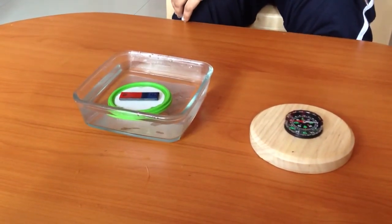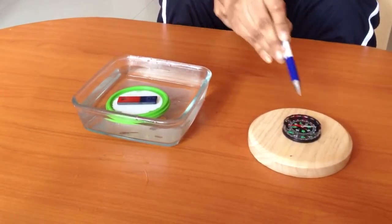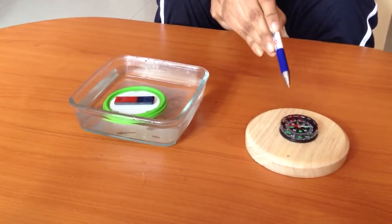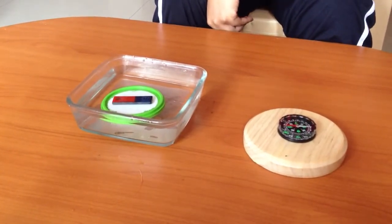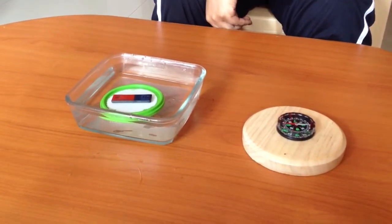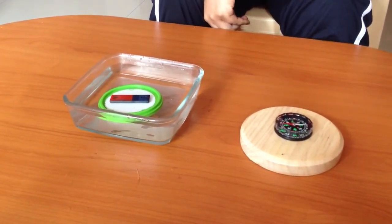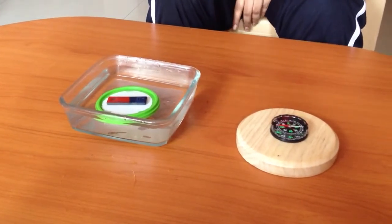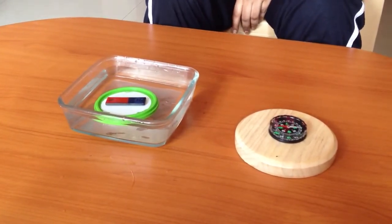If you compare the direction of bar magnet with the needle of the compass, you can see it is similar, that is, both points in the north side direction. This activity proves that a freely suspended magnet always aligns itself in north side direction.